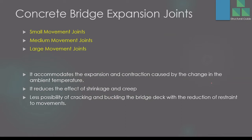First, let's look at bridge expansion joints. These are categorized based on the degree of movement: small, medium, and large. Depending on the movement required, we use different types of joints. For smaller movements we can use simpler, lower-cost joints, while for larger movements we need more effective and robust types. Expansion joints are needed to accommodate expansion and contraction caused by ambient temperature changes, since structures — whether steel or concrete — will expand and contract over time.